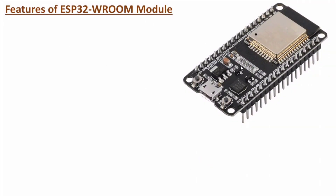Now let me discuss about features of ESP32 WROOM module. Here you can observe the image of ESP32 WROOM module, where inside this case we have the microcontroller. This microcontroller is connected with different IO pins — in total 36 pins are there. Here we have an antenna, which is not visible externally, but it is inside this case. Here we also have a USB port connection that one can use for programming of this ESP32 module.